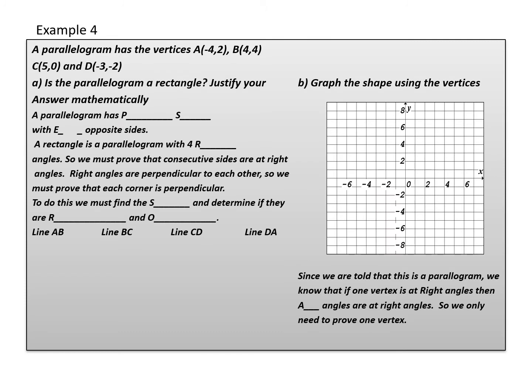My final example is a bit more challenging — you're going to have to pull in information from past years. The question is: we are told that a parallelogram has the following vertices A, B, C, D. A vertices is a corner or a vertex. Part A: is the parallelogram a rectangle? Justify your answer mathematically. Part B: graph the shape using the vertices.